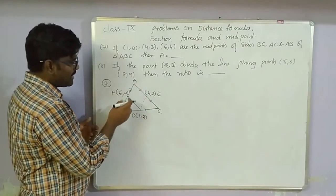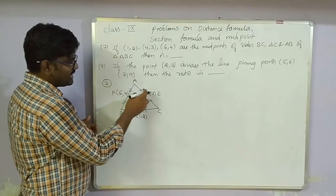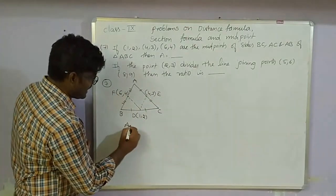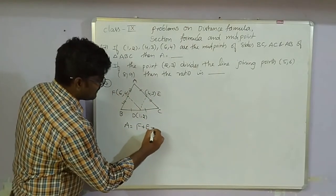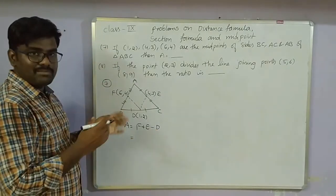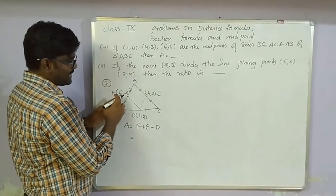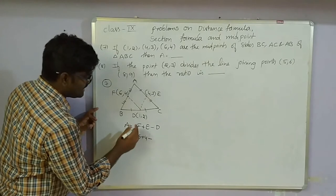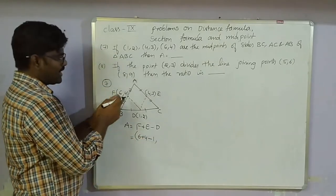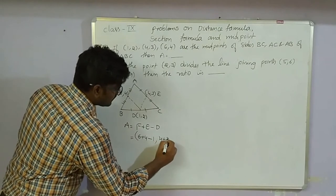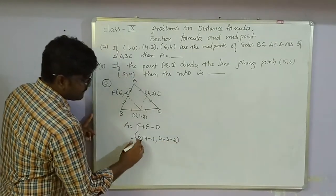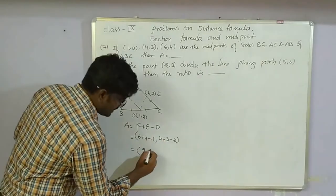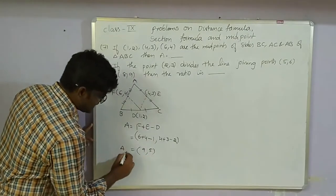By the midpoint theorem, BDEF forms a parallelogram. To find vertex A: A = F + E - D. X-coordinate: 6+4-1 = 9. Y-coordinate: 4+3-2 = 5. So A = (9, 5).